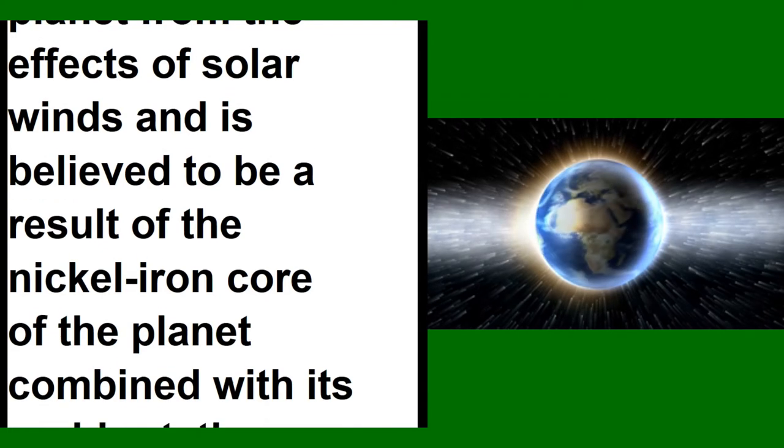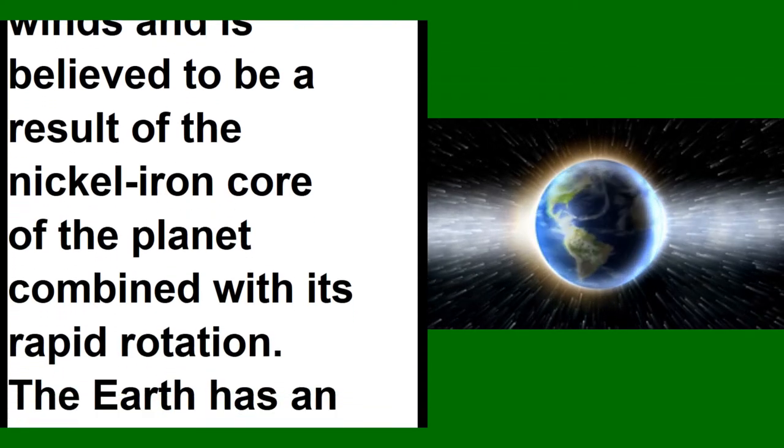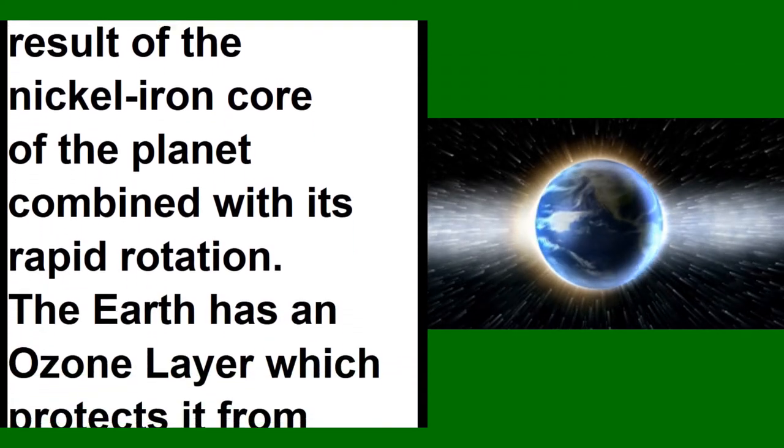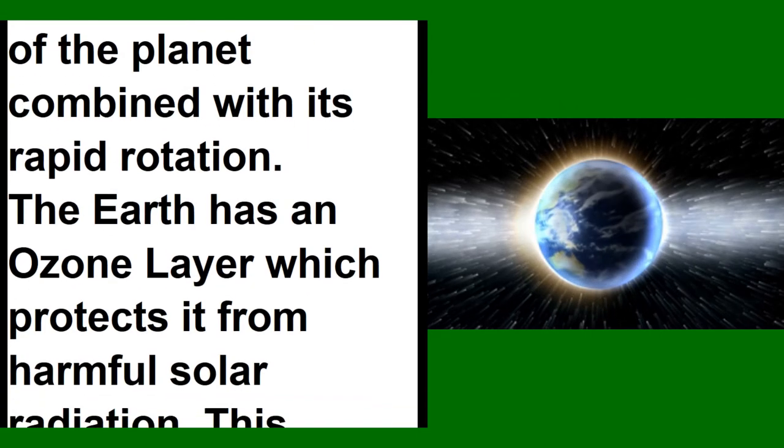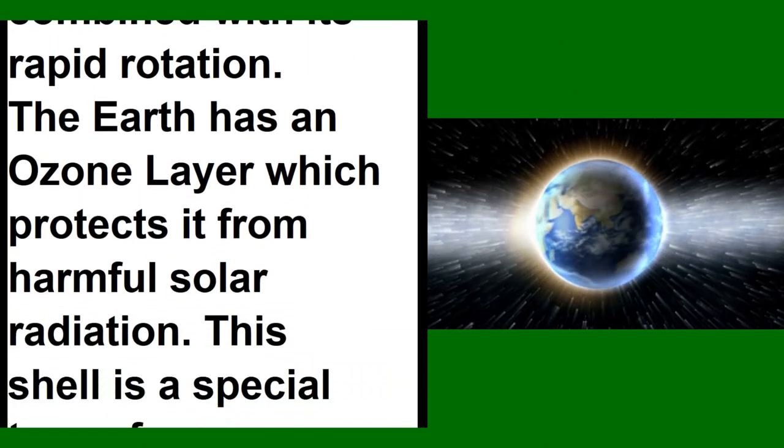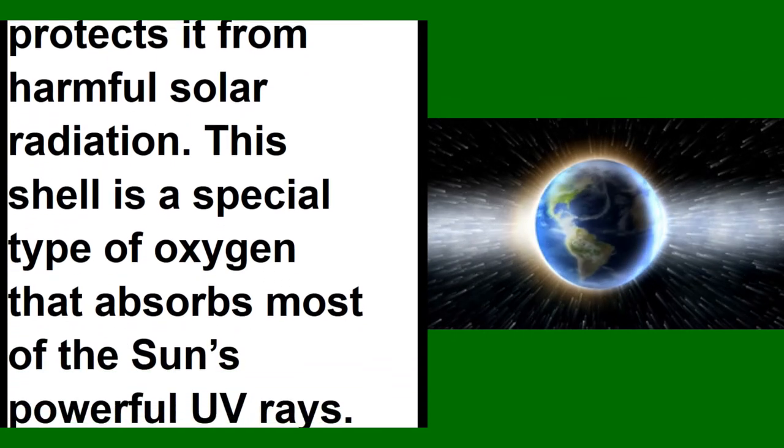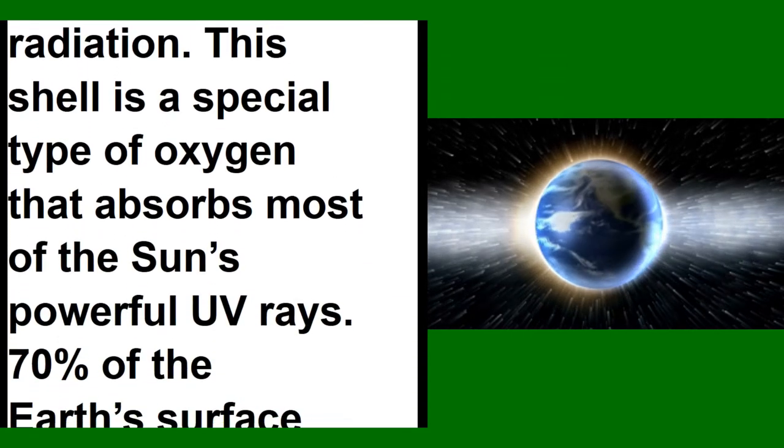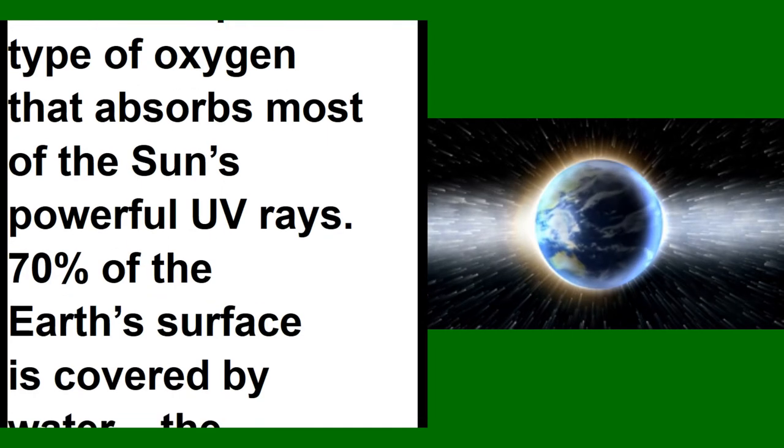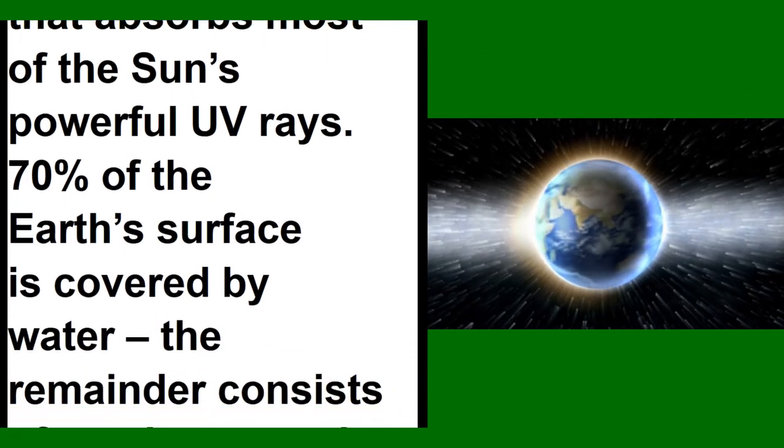Earth has an ozone layer which protects it from harmful solar radiation. This shell is a special type of oxygen that absorbs most of the sun's powerful UV rays. 70% of Earth's surface is covered by water; the remainder consists of continents and islands with many lakes and other water sources.